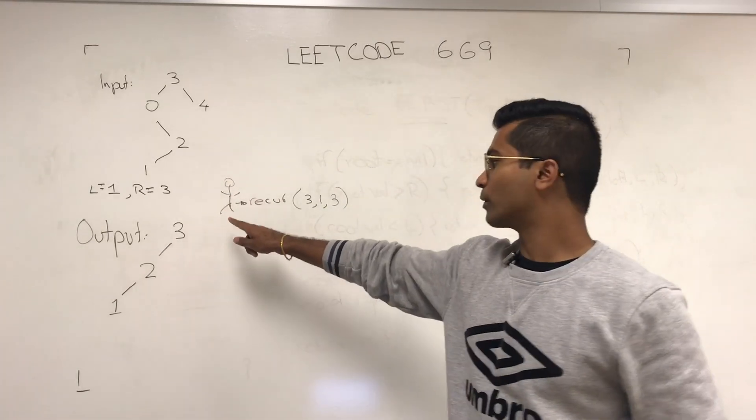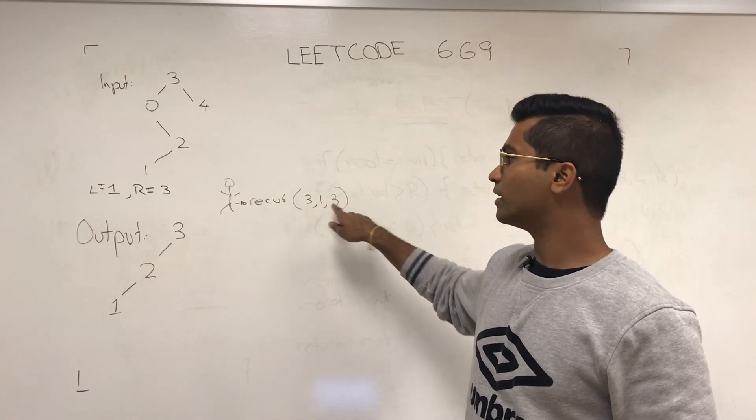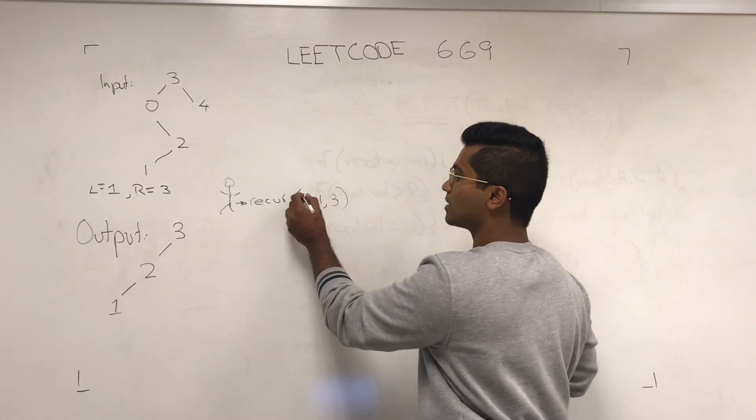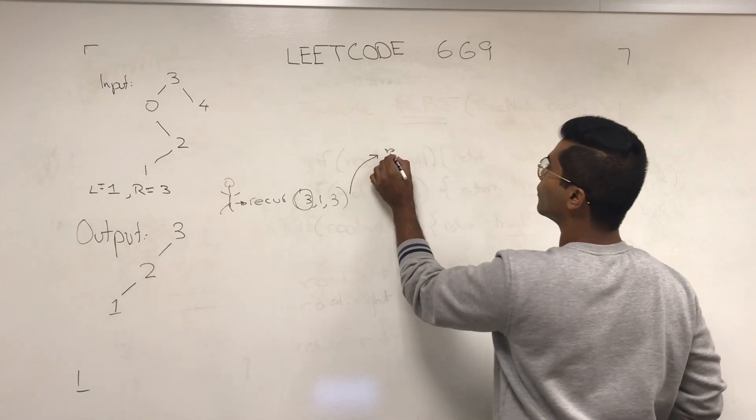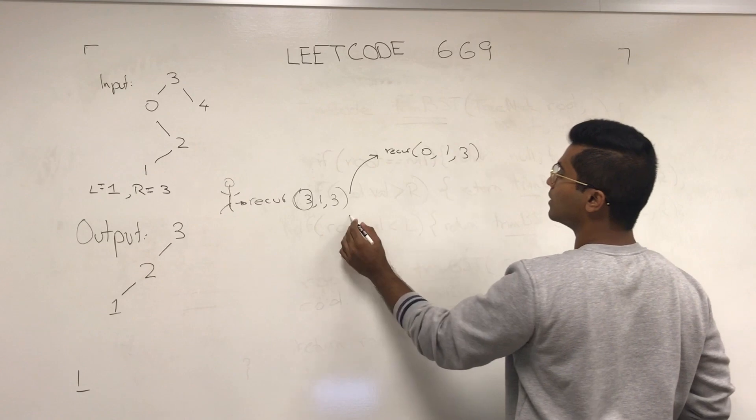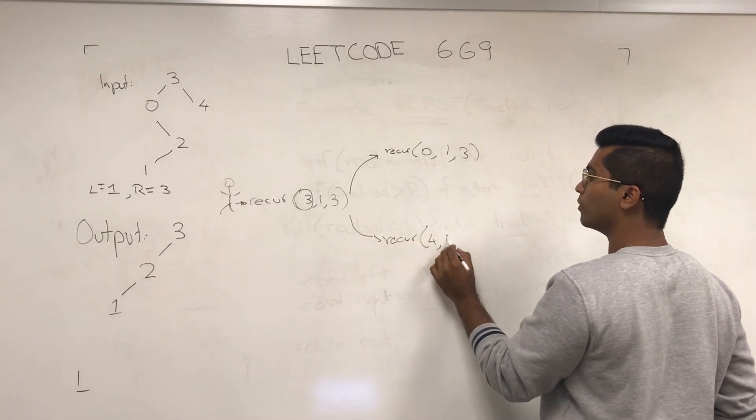So, this is us, and we're asking three with the limits 1 and 3, tell me what should be the ultimate result. 3 is going to say, hold on, let me ask. He's going to ask recur 0, 1, 3, he's going to say recur 4, 1, 3.